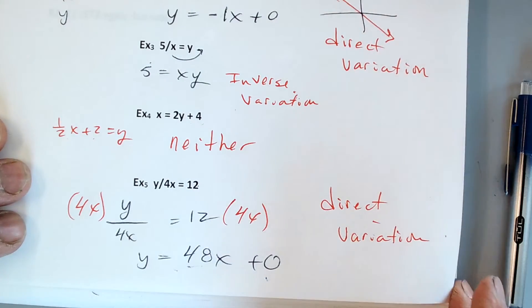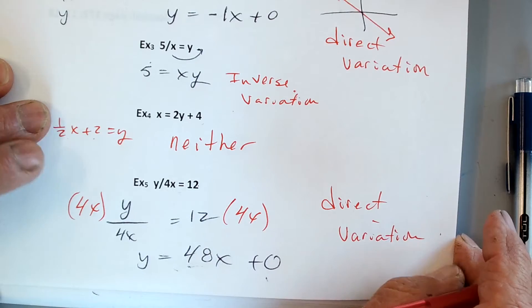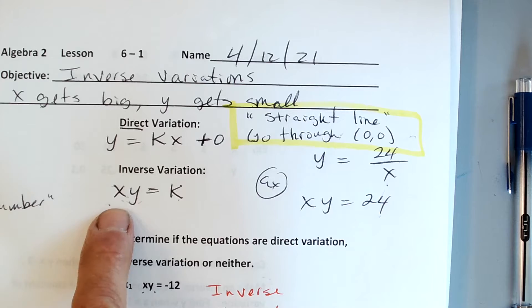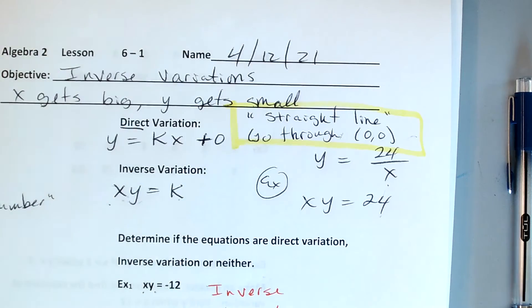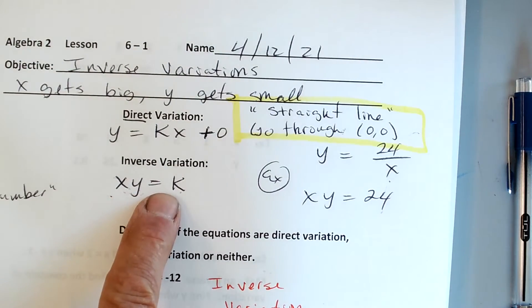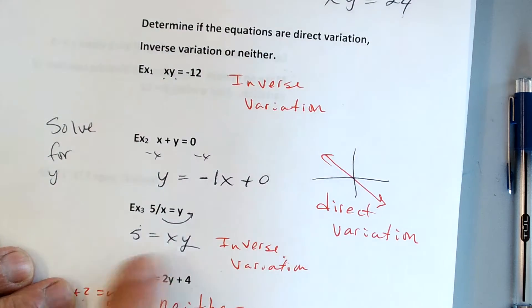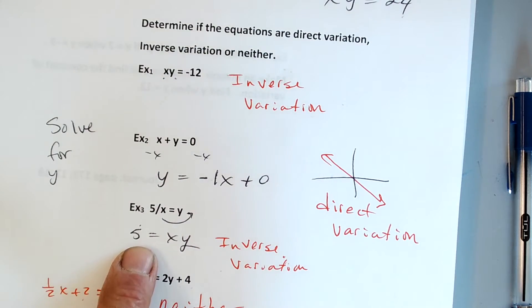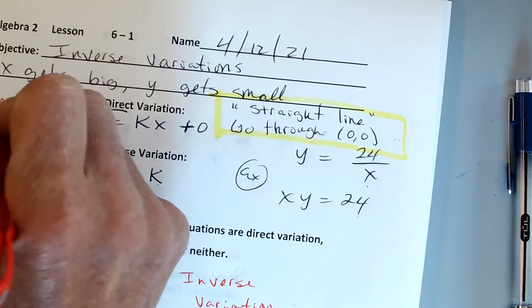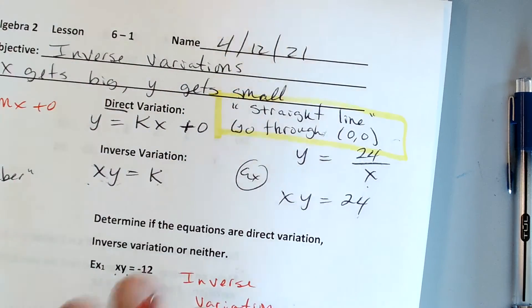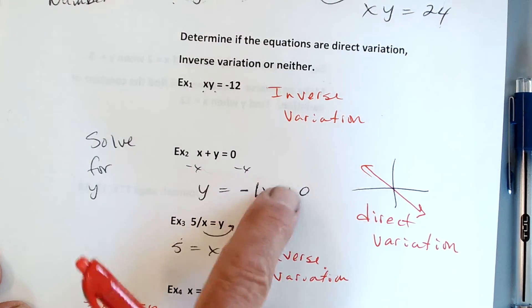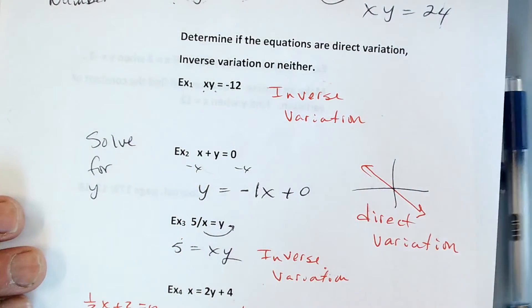Let me recap before I completely confuse you. If it is x times y equals some number, it's inverse variation, and then the graph looks like this. If it is just y equals some number, like y equals mx plus 0, it's like the slope, it'd be a straight line, and it's going to be direct. Now turn the page.